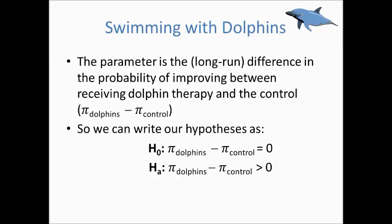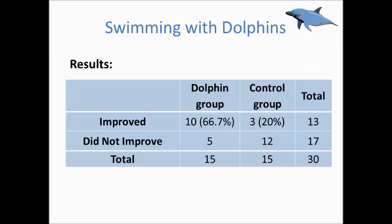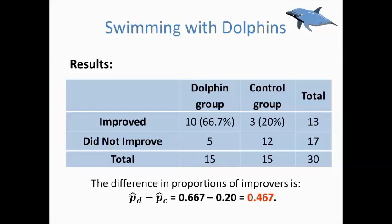Well, what did the researchers find? A summary of the results are shown in the two-way table. We see that subjects in the dolphin therapy group were more likely to show substantial improvement. In this group, 10 of 15, or about 67%, showed substantial improvement compared to only 3 of 15, or 20% in the control group. Our observed statistic is the difference in the proportion of improvers, or .467. This appears to be quite a substantial difference.